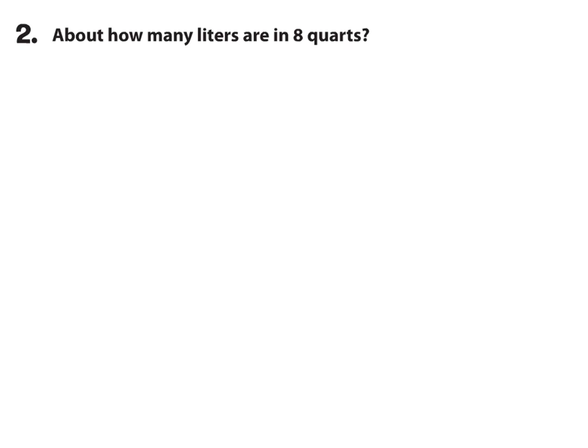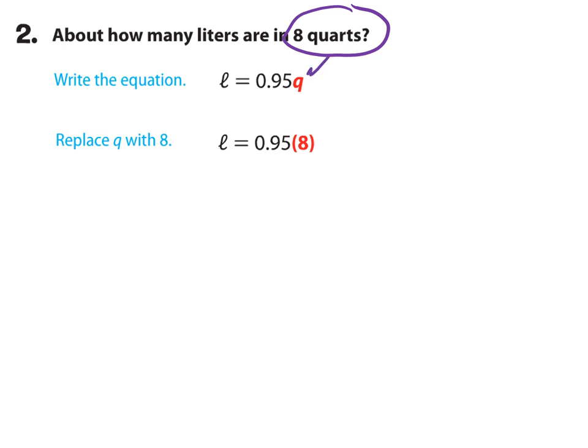Continuing with example one, example two tells us about how many liters are in eight quarts. So the first thing we're going to do is write the equation. Our equation was L equals 0.95 times the number of quarts. Then we're going to replace Q with eight. So now we'll have L equals 0.95 times 8. The reason we're replacing Q with eight is because they tell us here how many liters are in eight quarts. Then we multiply: 0.95 times 8 equals 7.6 liters. So in words, there are about 7.6 liters in eight quarts.